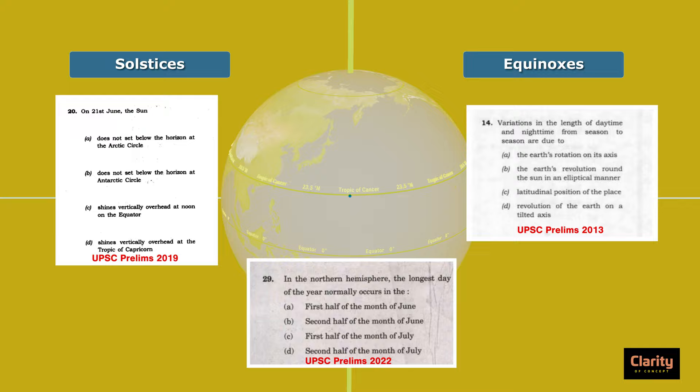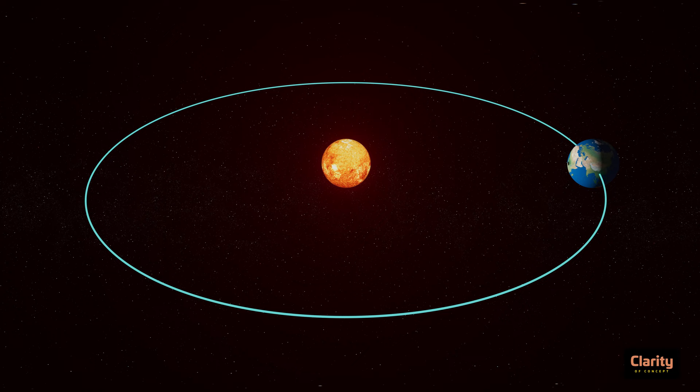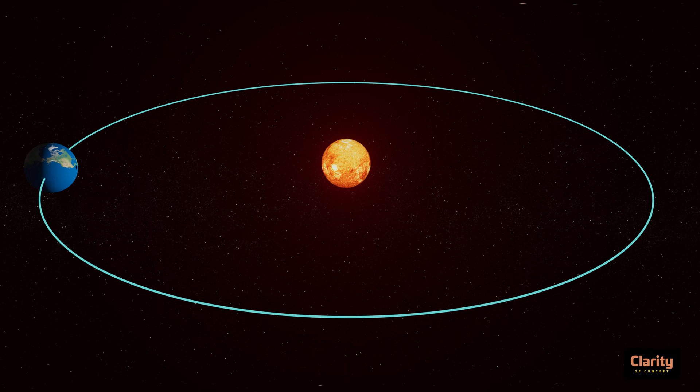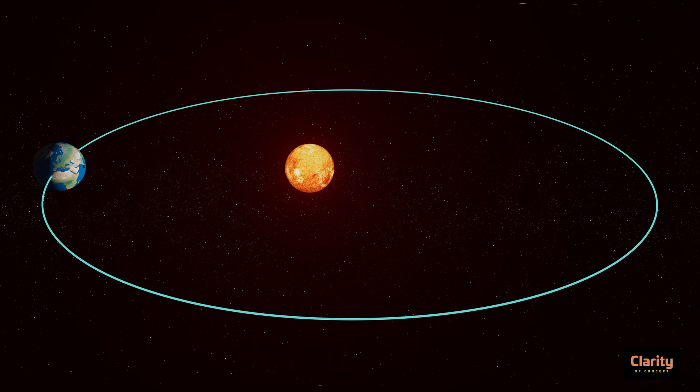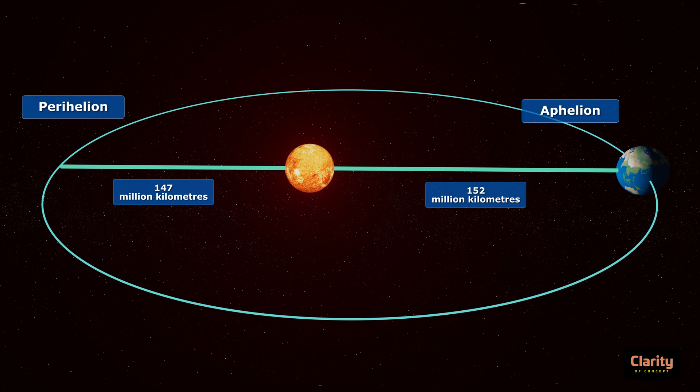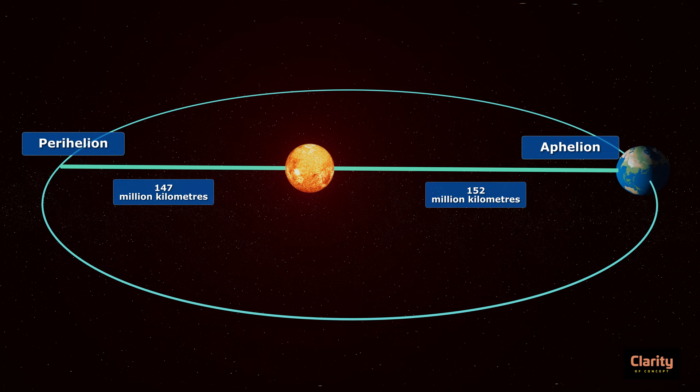Earth moves around the sun in an elliptical orbit. The orbit is not a perfect circle but oval shaped, hence it is called an elliptical orbit. Sun is not at the centre of this ellipse — it is slightly away from the centre. Hence, at one point earth comes closest to the sun at about 147 million km. At the farthest point, sun is as far as 152 million km. This closest point is called perihelion and the farthest point is called aphelion. This movement of earth around the sun in this orbit is called revolution of earth.